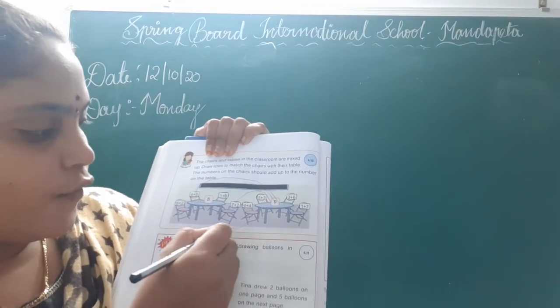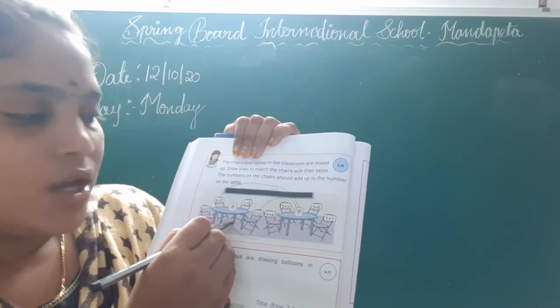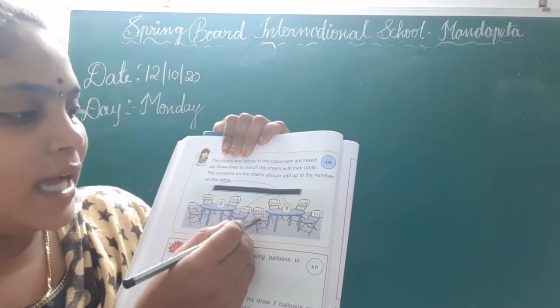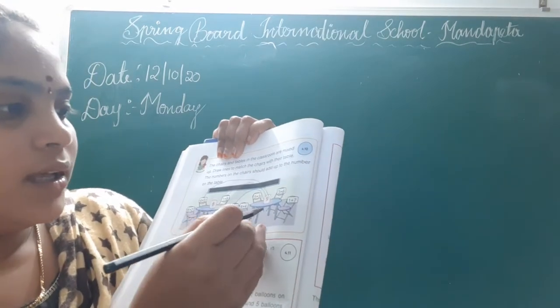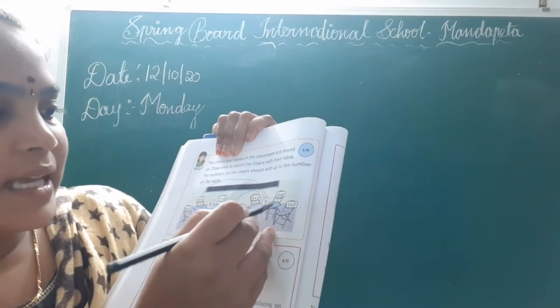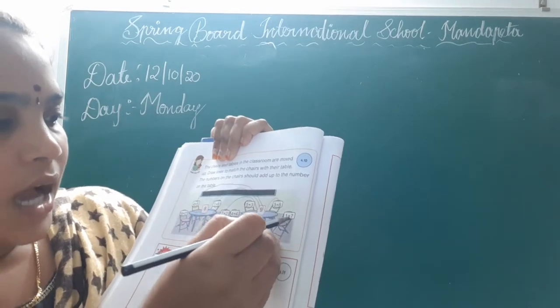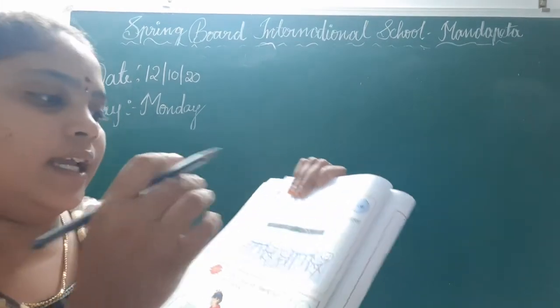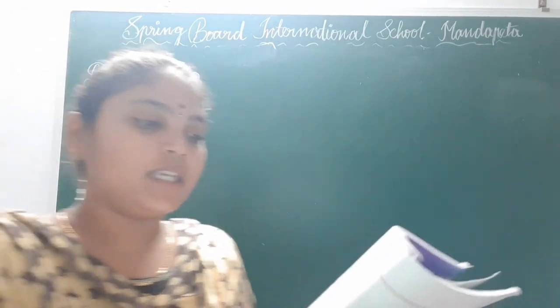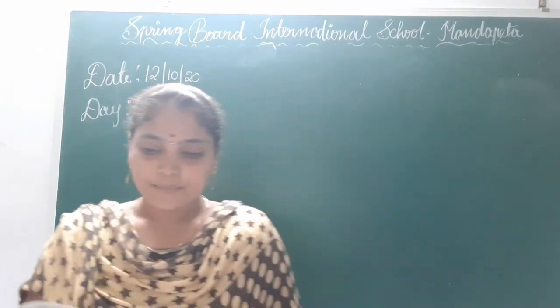Next, 4 plus 4 is 8 — match 4 plus 4 to the 8 table. 3 plus 6 is 9. And 1 plus 7 is 8. You have to match the chairs to the tables.